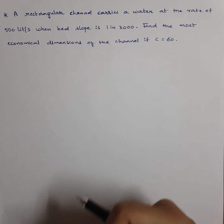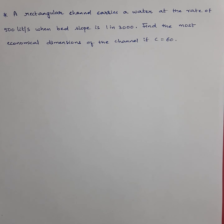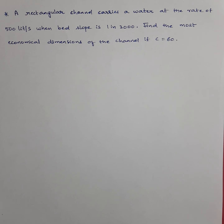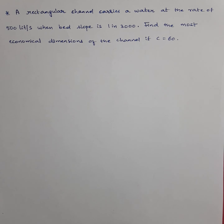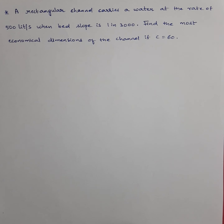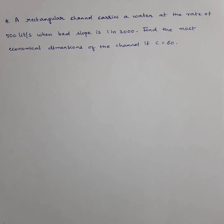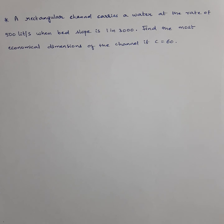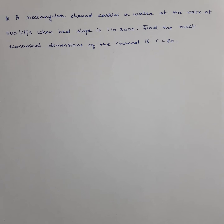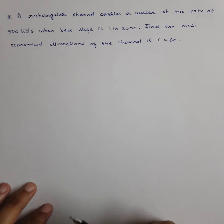In this video we will solve problems related to most economical sections. Let's see the first model problem: a rectangular channel carries water at the rate of 500 liters per second when bed slope is 1 in 3000. Find the most economical dimensions of the channel if C is equal to 60. It is clearly asking for the most economical dimensions, meaning we need values of B and D. Let's start writing the given data.